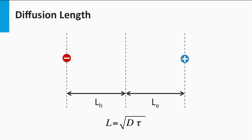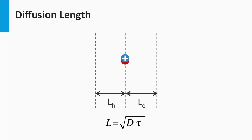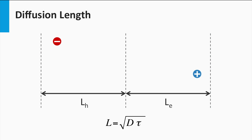Loss mechanisms like recombination determine the lifetime of charge carriers. If the recombination rate is high, the lifetime is low. The diffusion length L is the average distance excited charge carriers can travel, and is determined by the carrier lifetime — a high recombination rate means a shorter diffusion length. The diffusion length and lifetime are related by a simple equation: L equals the square root of the product of D (the diffusion coefficient) and tau (the lifetime).